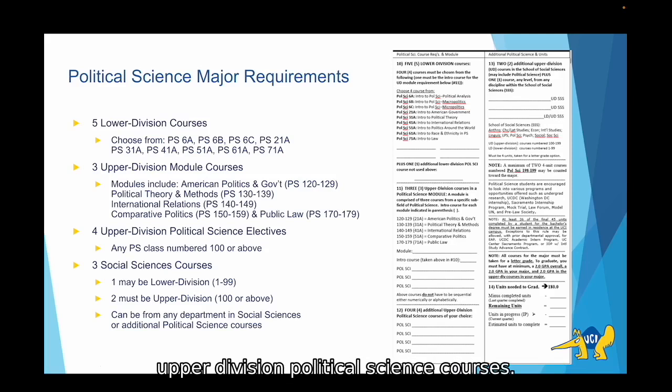Then you'll take four upper division political science courses. These can be any political science course numbered 100 through 199.